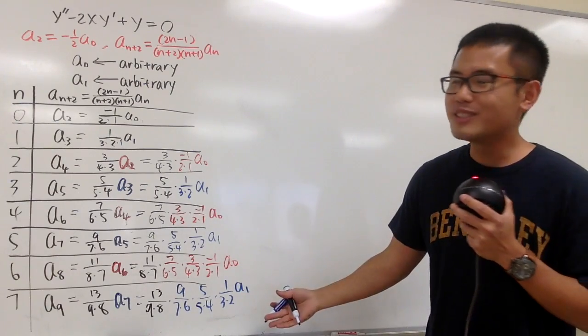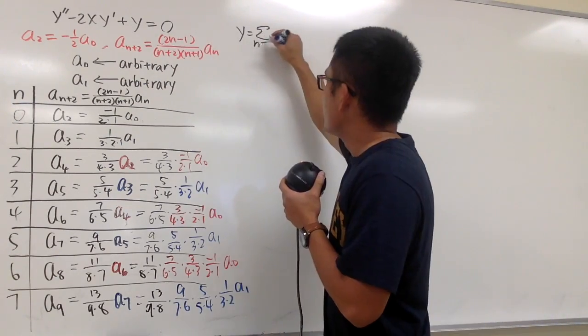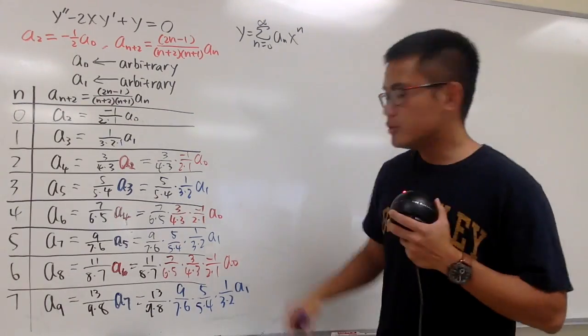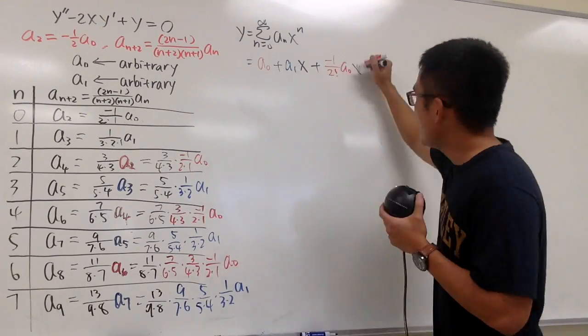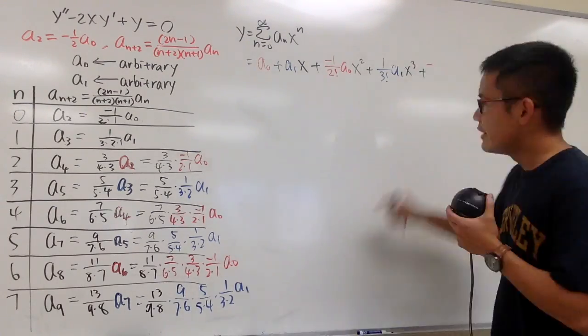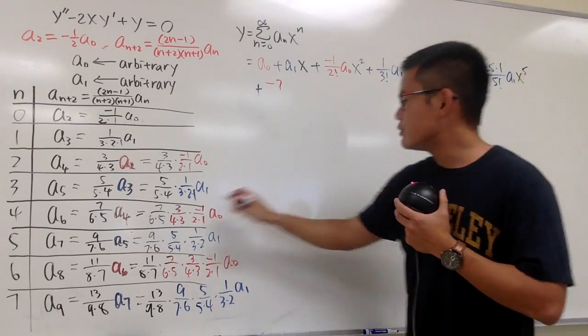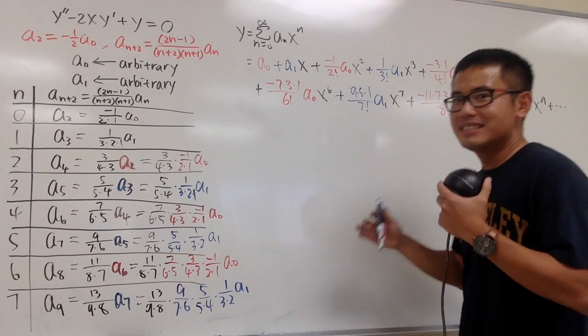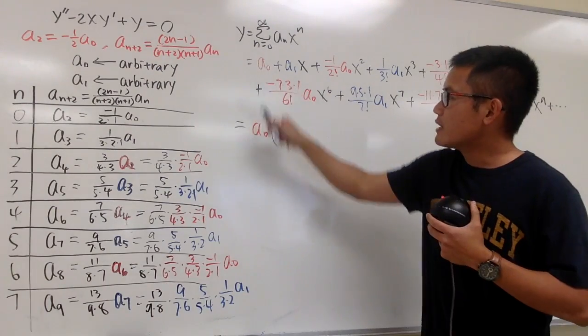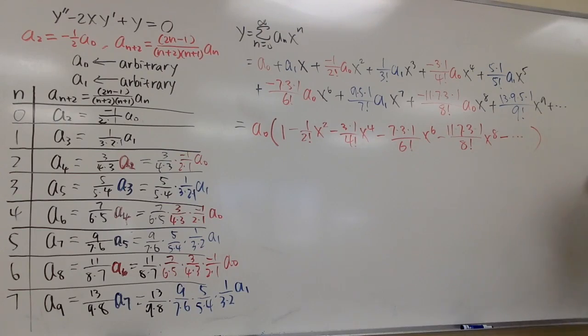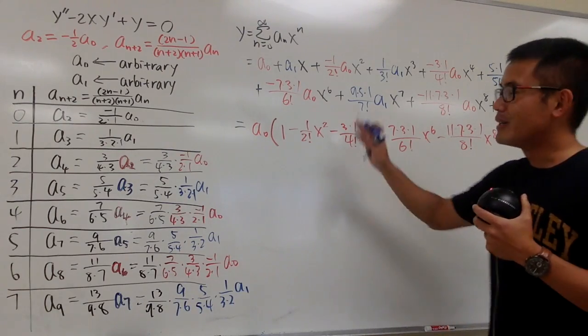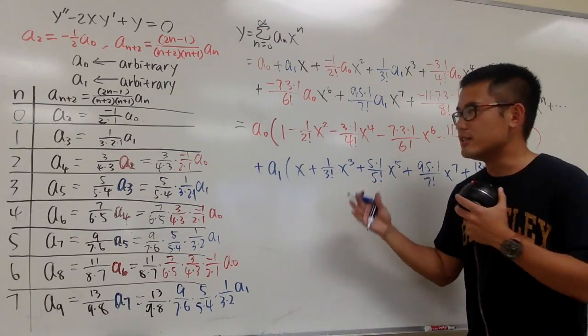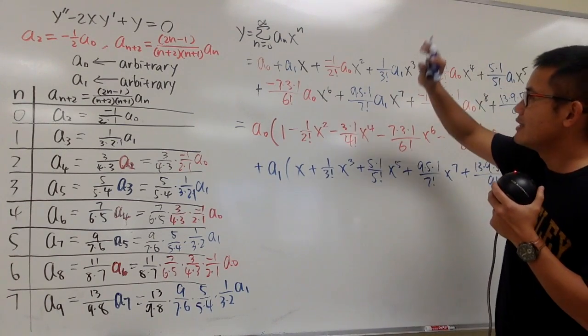And now we have all the ingredients to write the solution for that differential equation. The series when n starts from 0 to infinity, an times x to the nth power. Put all the terms that has the a0 first and then factor out all the a0. We factor out the a0, so this is going to be forever, right? And then we put down all the terms that have the a1 in blue. I will call this the expanded form, and this is usually more preferred than this.